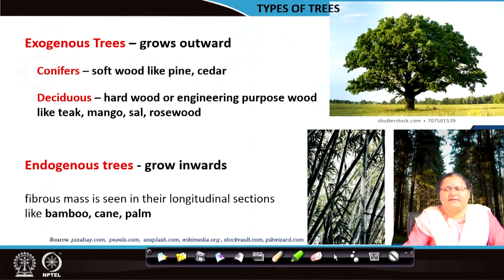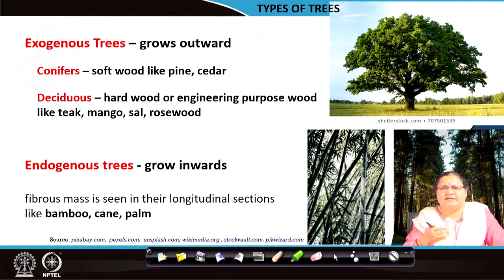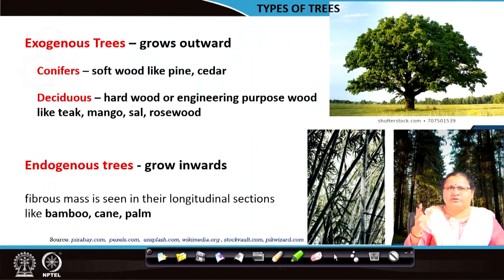The conifers have pale color and are actually softwood — pine, cedar, fir, birch. Whereas deciduous cross sections are not so light in color; they are a little more brown and are used mostly for engineering purposes. The conifers are of use too — they can go for furniture and interior items. Coming to the endogenous trees, they grow inward and a fibrous mass is seen in their longitudinal section. The exogenous grows outward, and the deciduous grows much larger than the conifers, so you can get a long layer of wood in the deciduous variety.